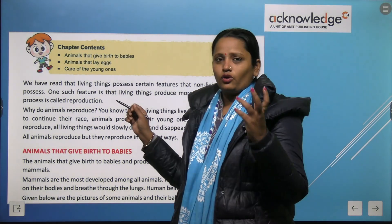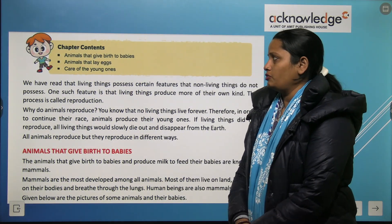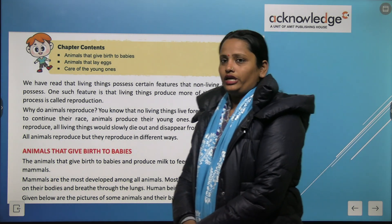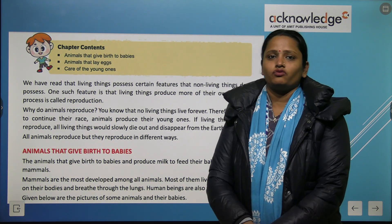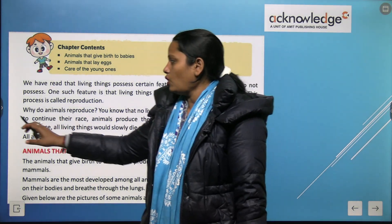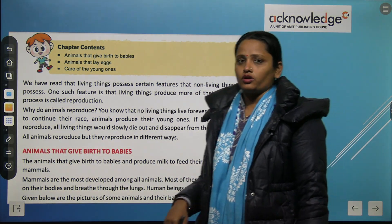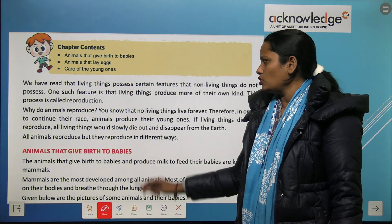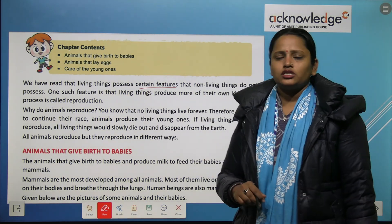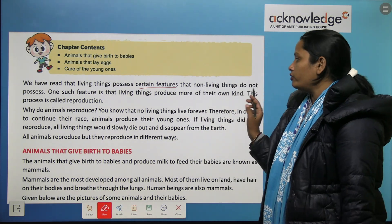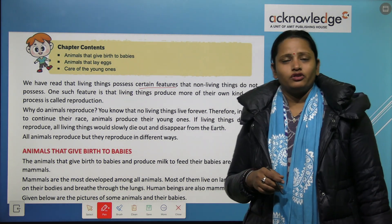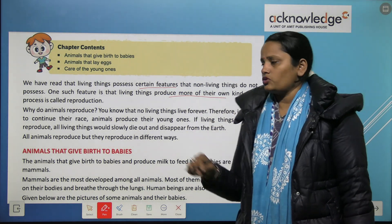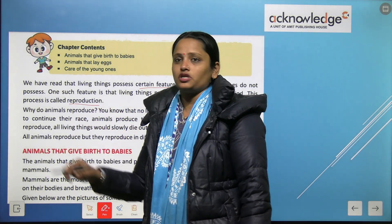We are going to read about animals that give birth to babies, animals that lay eggs, and care of the young ones. We have read that living things possess certain features that non-living things do not possess. One such feature is that living things produce more of their own kind. This process is called reproduction.